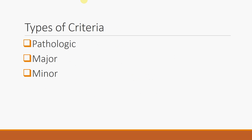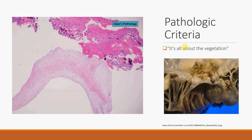There are three types of criteria: the pathologic, the major, and the minor. It's really more like a hierarchy — pathologic is the most definitive, major is definite, and minor for the most part is somewhat nonspecific but could also relate to the disease entity.